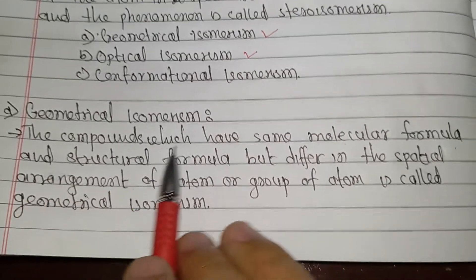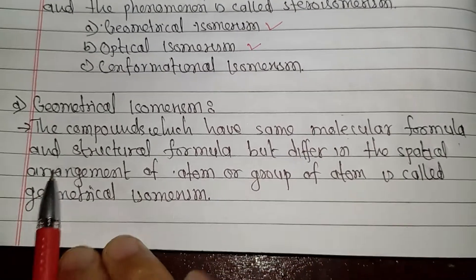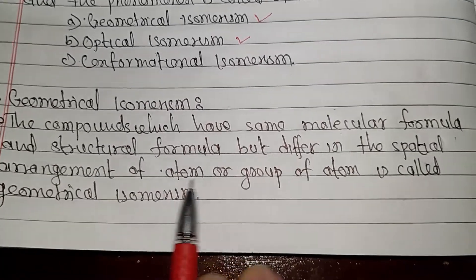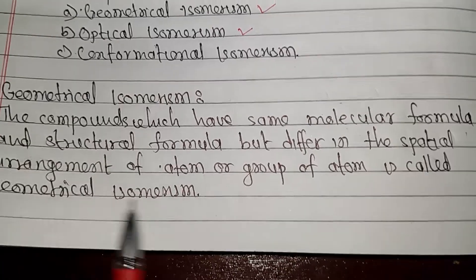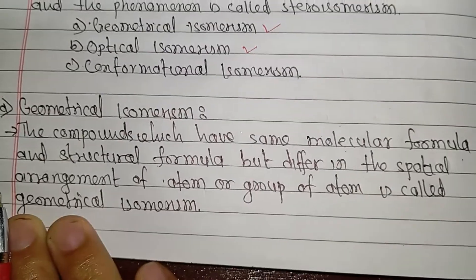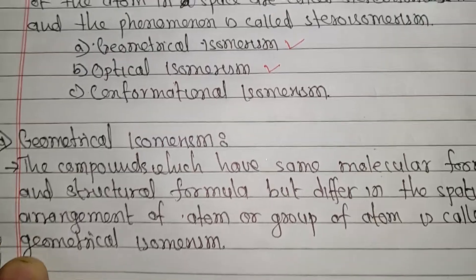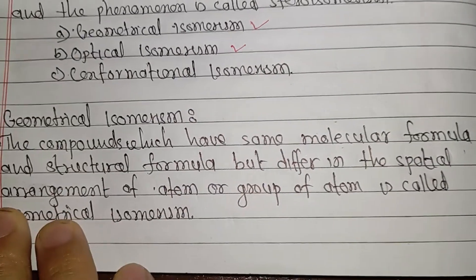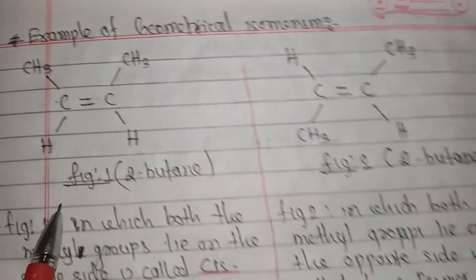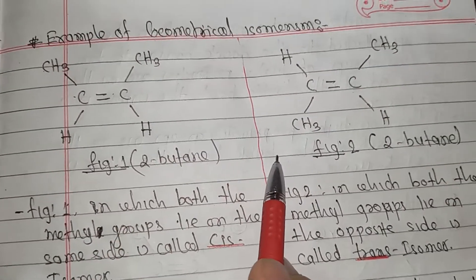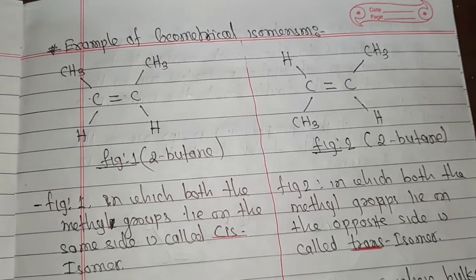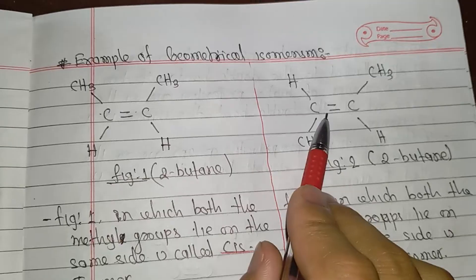Geometrical isomerism: the compounds which have the same molecular formula and structural formula but differ in the spatial arrangement of atoms or groups of atoms is called geometrical isomerism.